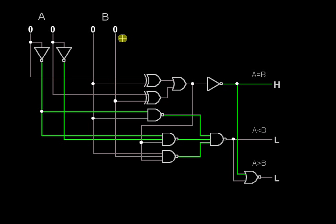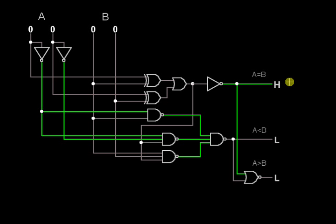I am taking an example where all inputs are zero. A = 00, which is zero, and B = 00, which is also zero, so A equals B. We will check how we get the A equals B output high.